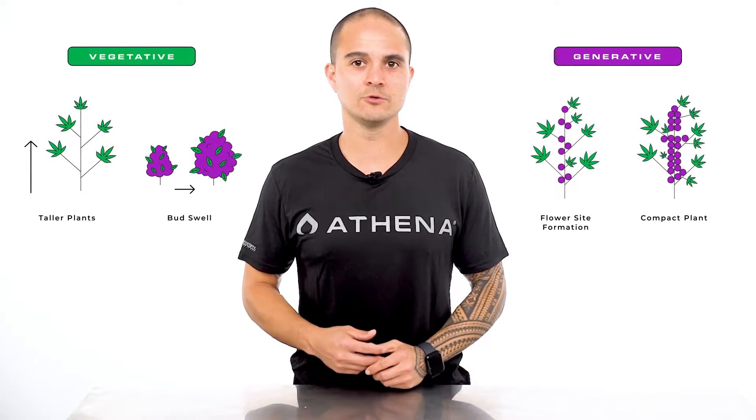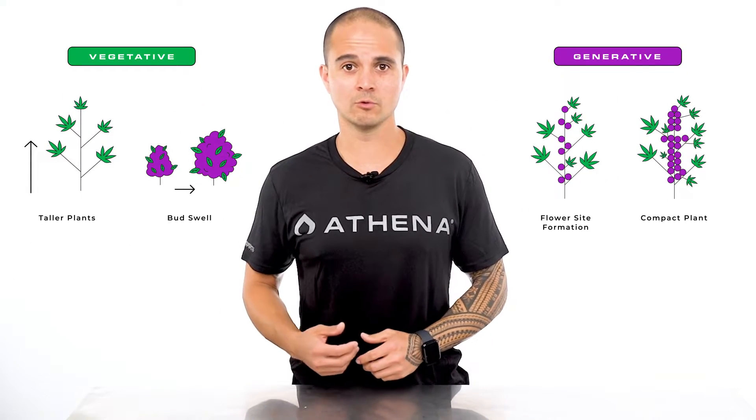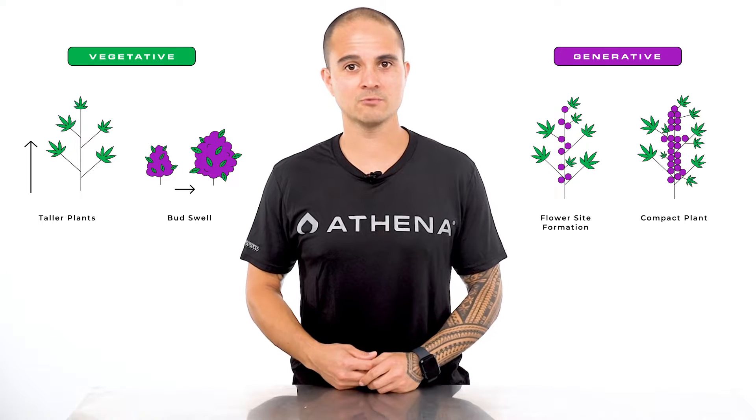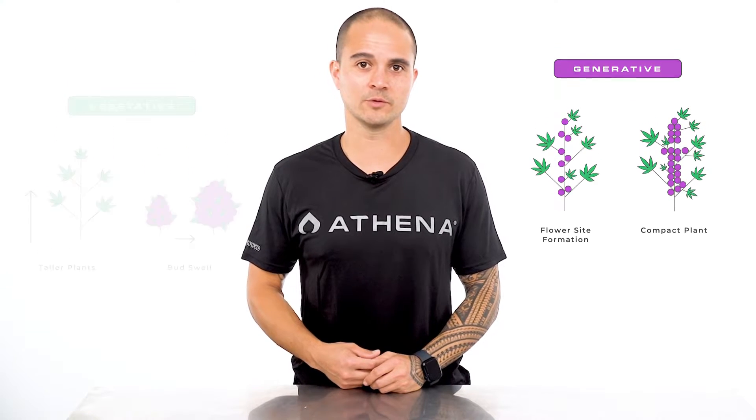Being able to bounce back and forth between these two types of growth will allow us to control the height of our plants while also being able to put on mass when it's time. So you must be wondering how can irrigation strategy promote vegetative or generative growth?